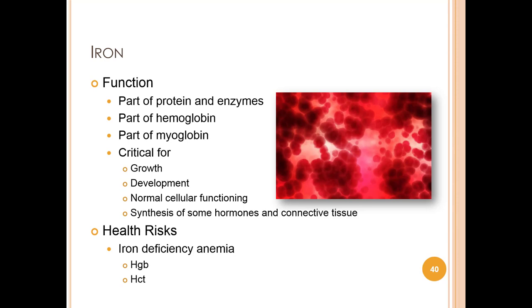Iron is a mineral found in many proteins and enzymes the body requires to stay healthy. Most iron in our bodies is found inside hemoglobin — the iron-containing pigment in red blood cells that carries oxygen from the lungs to the body. Iron is also crucial for growth, development, normal cellular functioning, and synthesis of some hormones and connective tissue. If there isn't enough iron, hemoglobin decreases, reducing oxygen supply to cells and organs, leading to iron deficiency anemia. Women have multiple prenatal blood tests including hemoglobin and hematocrit; if levels are low, serum iron is also measured and supplemental treatment can begin.